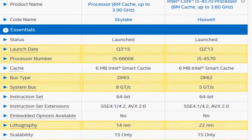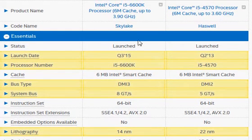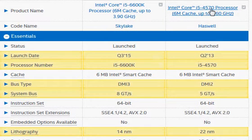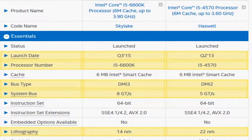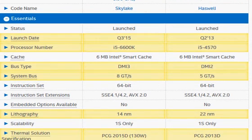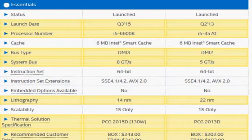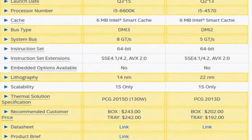Let us compare the Intel's newer Core i5-6600K with the older Haswell i5-4570 processor. The K suffix, as most of you may know, is for the officially overclockable part. We will compare without overclocking primarily in mind, but with the background knowledge that it is overclockable and will get slightly better performance using overclocking with special cooling and so forth.